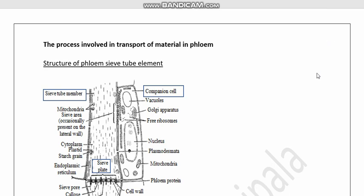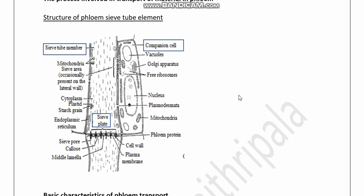The process involved in transport of materials in phloem. First of all, you have to recall the structure of the phloem tissue. In this diagram you can observe one sieve tube element and one companion cell. Between two sieve tube elements at their cross wall you can observe the sieve plate, and this cell has very thin cytosol in the peripheral region.